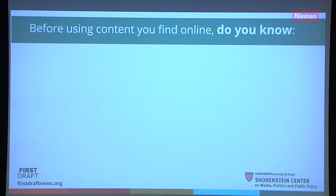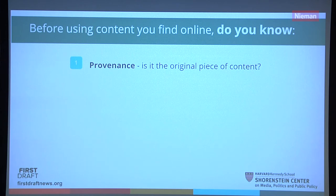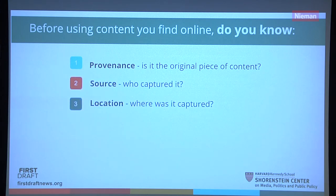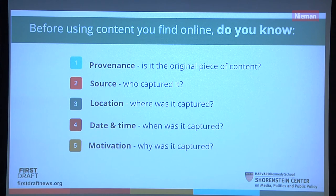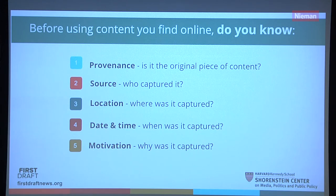Before using content you find online, the one thing we want everybody to look at is provenance — is this an original piece of content? And the source: who captured it? The location: where was it captured? The date and time — which is different from the upload time. And the motivation: why was it captured? If you look through this list, you'll see very familiar questions to journalism: who, what, when, where, why. As a journalist you would also check the authenticity of the source, and wouldn't incorporate information into your report without source information.